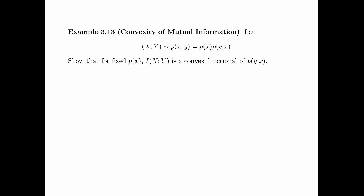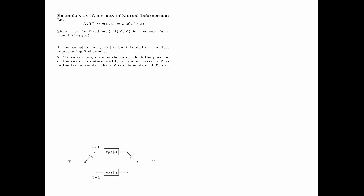In example 3.13, we are going to show the convexity of mutual information. Specifically, let the pair of random variables x and y have joint distribution p(x,y) = p(x)·p(y|x). We are going to show that for fixed p(x), I(x;y) is a convex functional of p(y|x). Let p1(y|x) and p2(y|x) be two transition matrices representing two channels. Consider the system as shown, in which the position of the switch is determined by a random variable z, where z is independent of x — that is, the mutual information between x and z is zero.